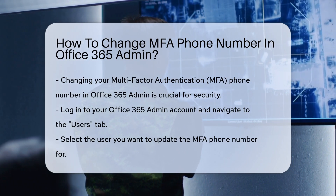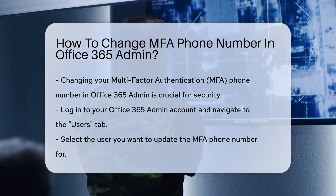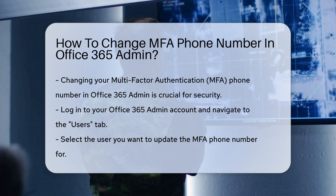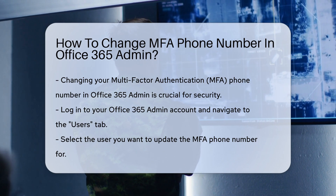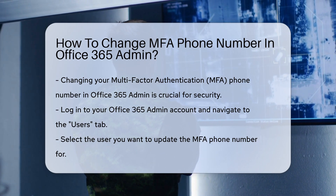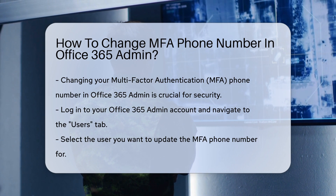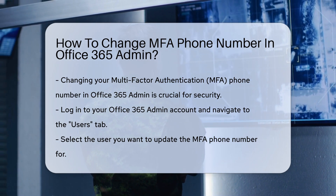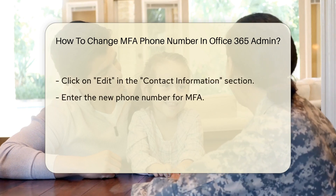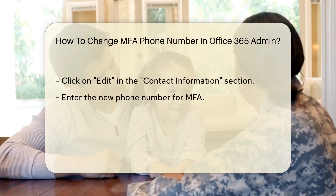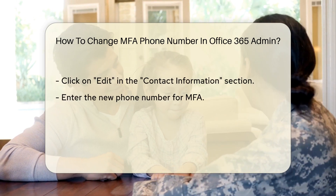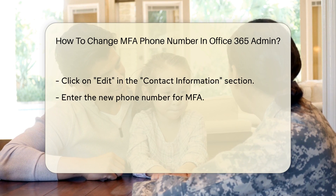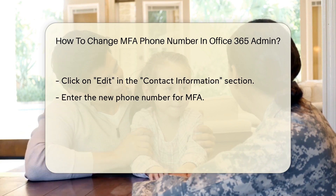First, log in to your Office 365 Admin account using your credentials. Navigate to the Users tab and select the user for whom you want to update the MFA phone number. Look for the Contact Information section and click on Edit to make changes. Locate the phone number field and enter the new number you wish to use for MFA.